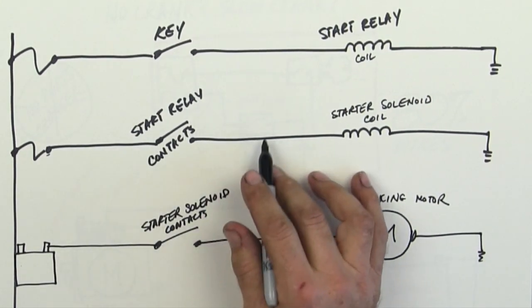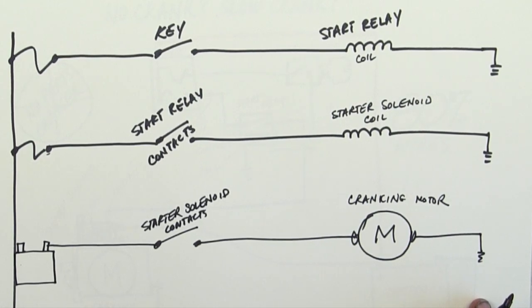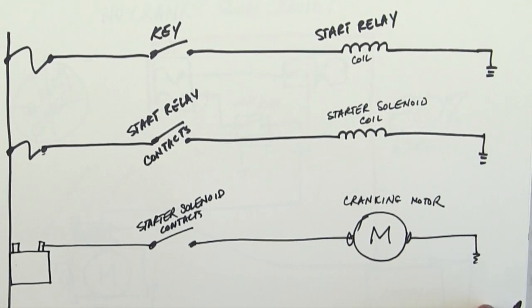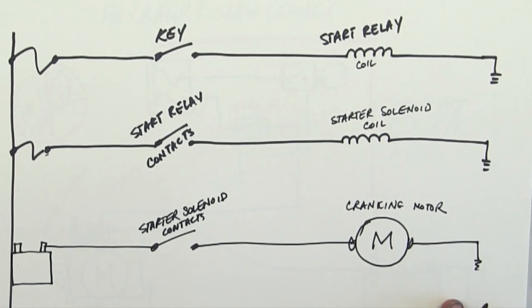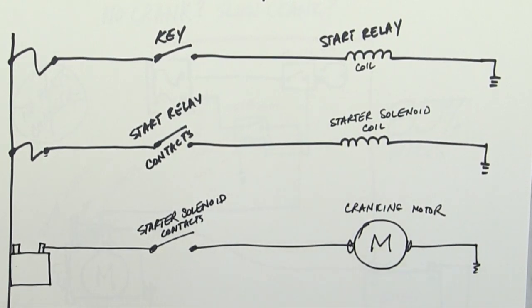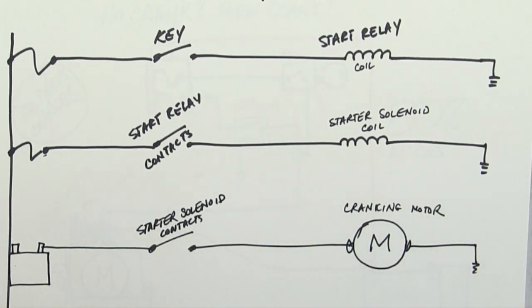Now there might be a neutral safety switch in here, but that's up to you to know because of schematic reading. Is the machine in neutral? Is the truck in neutral? Is the transmission engaged? That's where the ECM could be involved. The transmission ECM could be problematic as well.